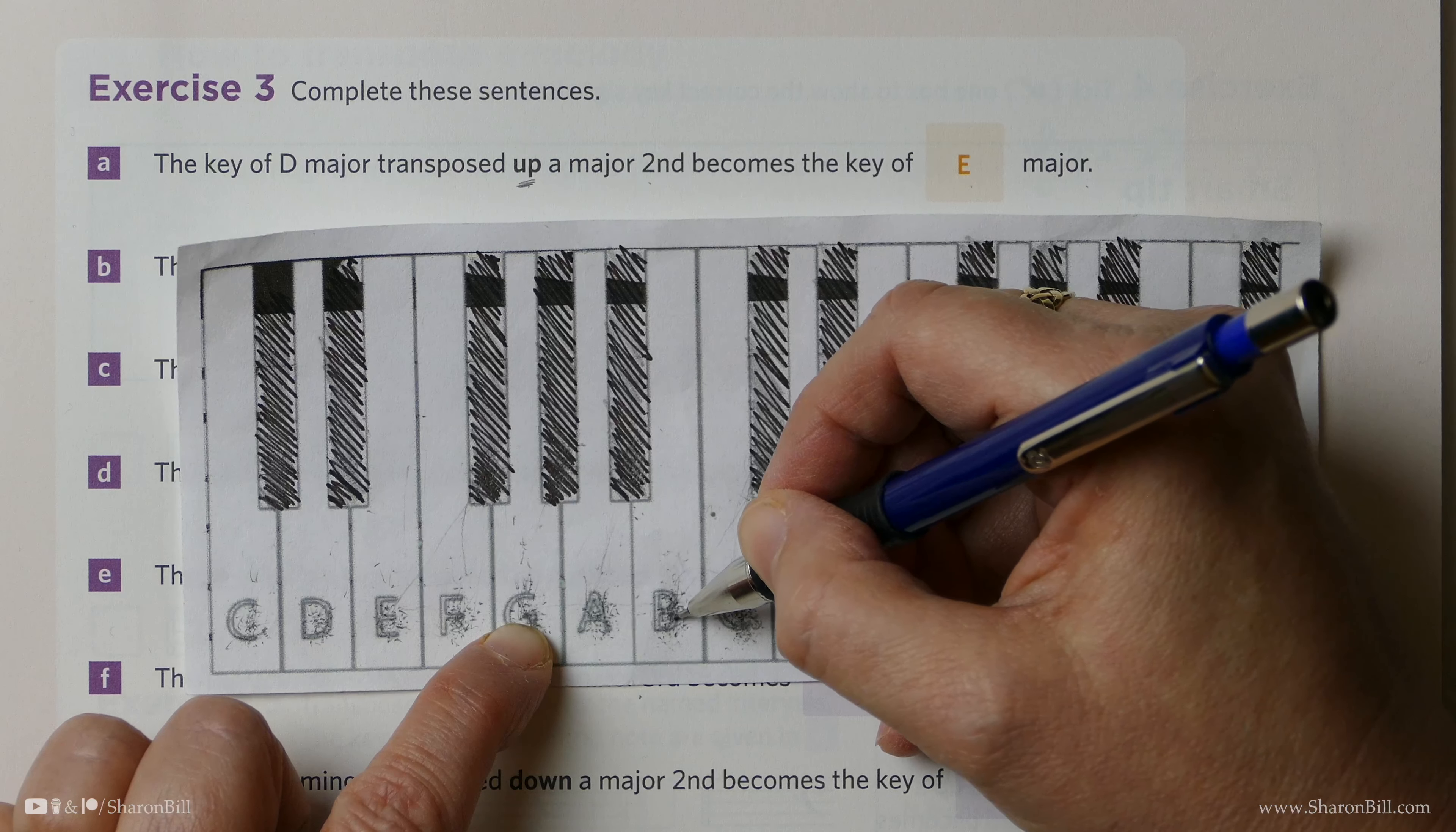So let's complete this together now. We have the key of E minor, and we need to transpose down a major 2nd. So E, down a major 2nd. So here is E, that's 1, down 2, 1, 2. And we know that D to E is a full step, and so we've gone down a full step, a major 2nd, and so we've gone from E minor to D minor.